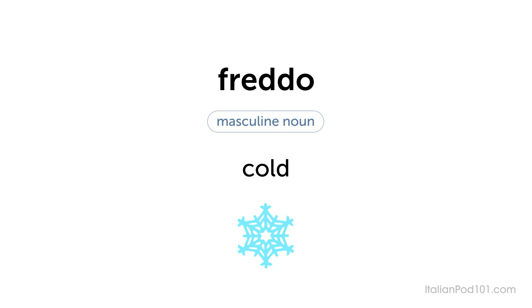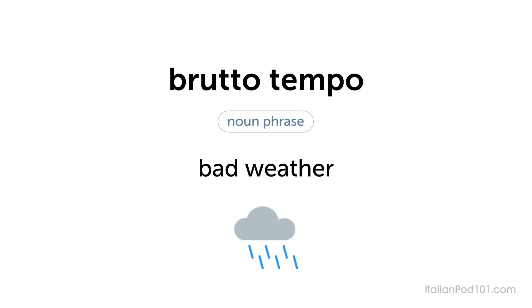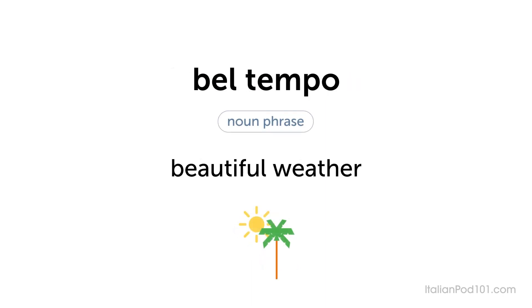Let's review the key vocabulary. Freddo — cold. AFA — humidity. Brutto tempo — bad weather. Bel tempo — beautiful weather.